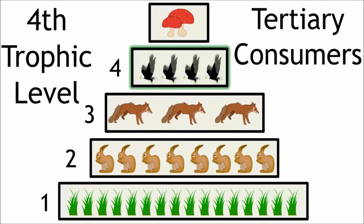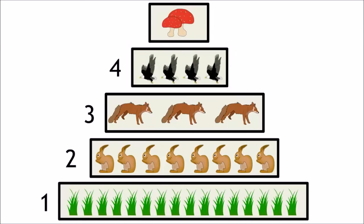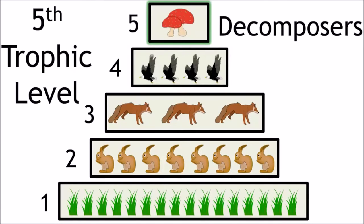Followed by the eagle, which is the tertiary consumer, level 4. We've included decomposers as trophic level 5. In this example it's the fungi.